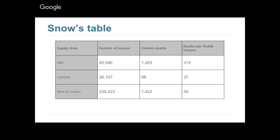John Snow counted up the number of houses, the number of cholera deaths, and the deaths per 10,000 houses, and made a table. Please discuss this table with your neighbor — what do you notice and what might you conclude from this data?